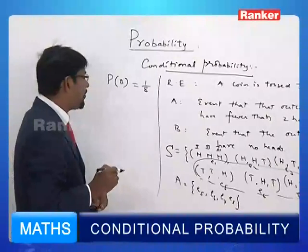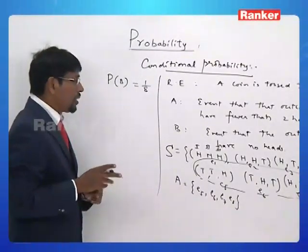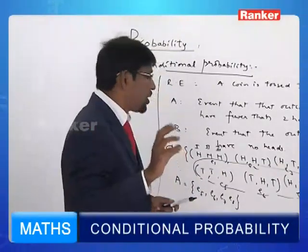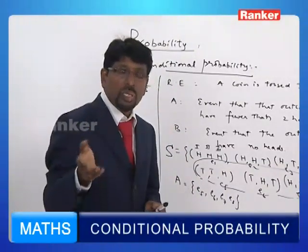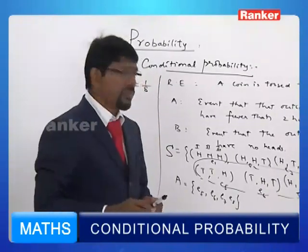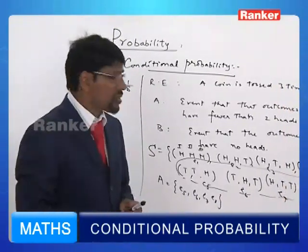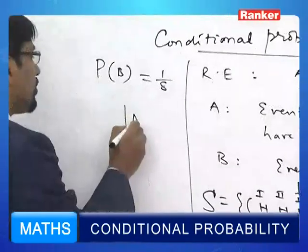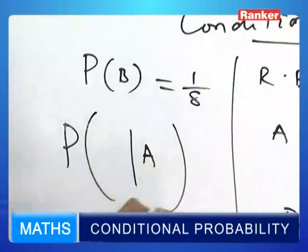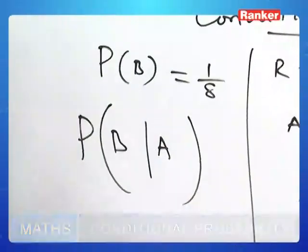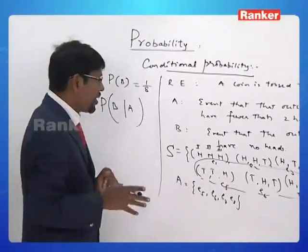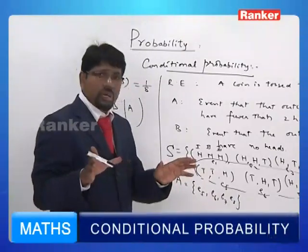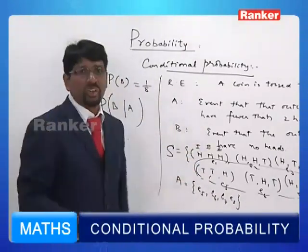But on the other hand, suppose we are interested in the chance of occurrence of B — that is, the event that there are no heads — but we are also told that there are fewer than two heads. So, given that A has happened, how do we write it? We denote it as the probability of B given A. When we say given A, the sample space is reduced to the outcomes favorable to A.